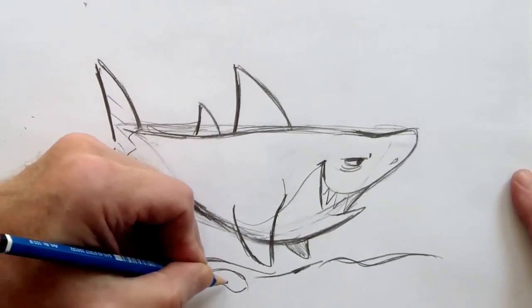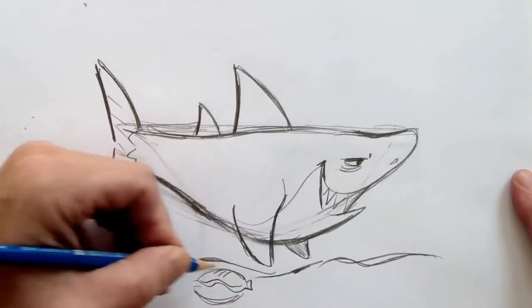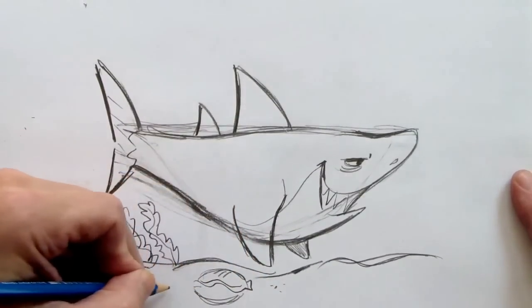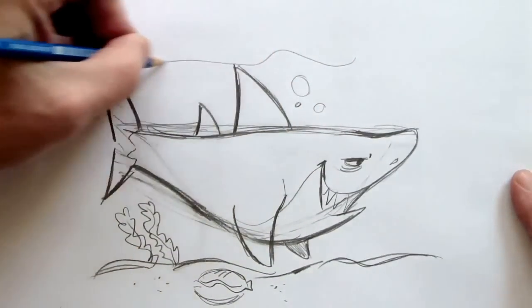Maybe a giant clam. Also there. Some dots, because that's sand. A couple of bubbles. And a current line.